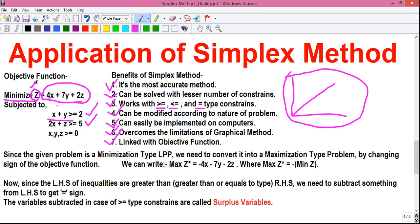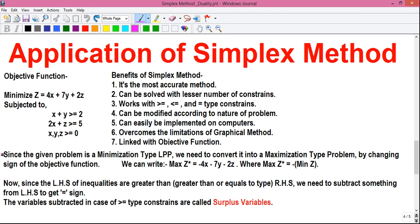our goal here is to minimize Z. Z is the objective value. We have to minimize the value of Z for some values of X, Y and Z. So, our objective is to find out such value of X, Y and Z for which the value of capital Z or objective value will be minimum. So, those are the benefits of simplex method. Now, let's solve the problem.